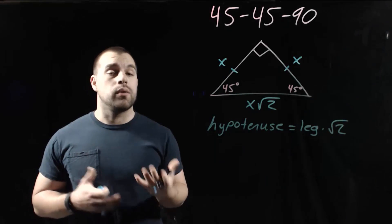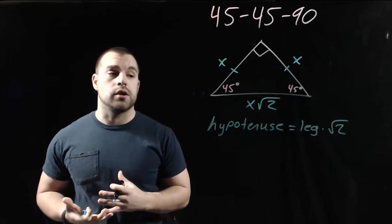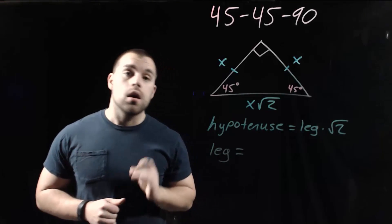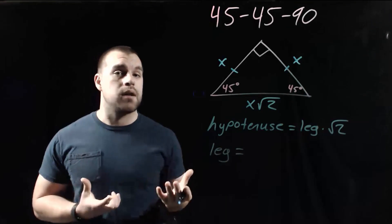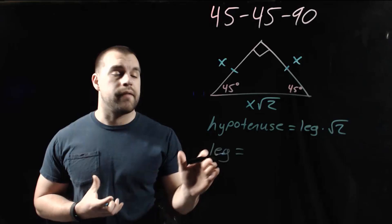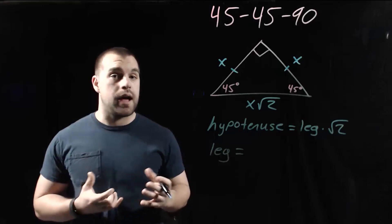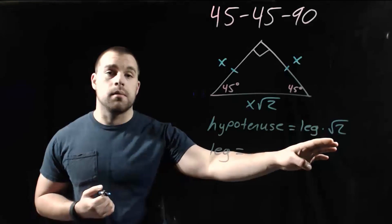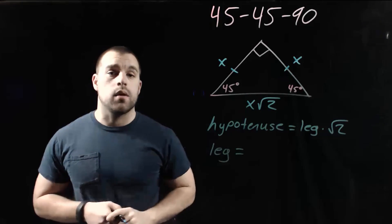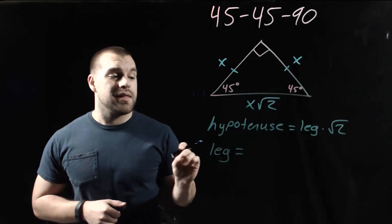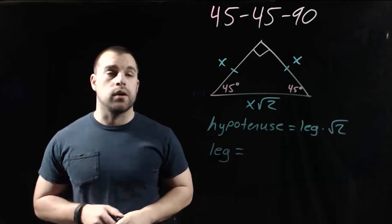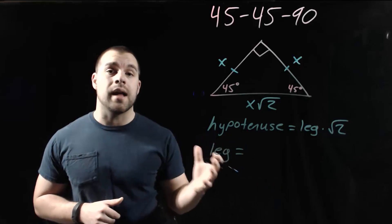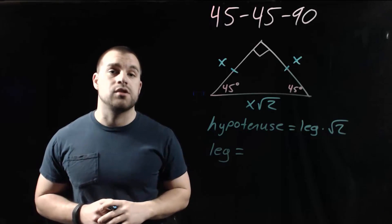Now we can also use that to go the opposite direction. If we know the length of the hypotenuse and we want to find the length of the leg, we're going in the opposite direction, so we're not going to multiply by the square root of 2. Instead, we're going to take the hypotenuse and divide it by the square root of 2.